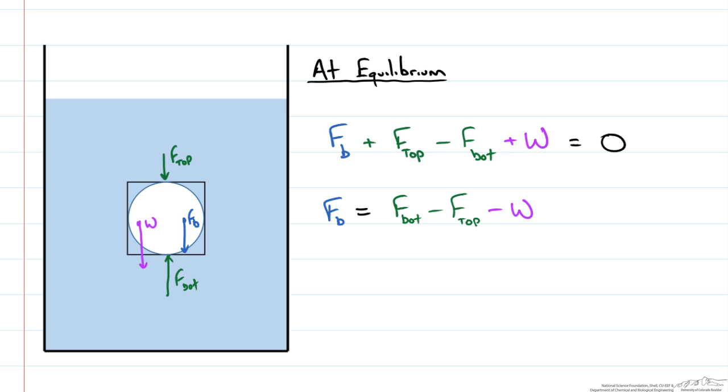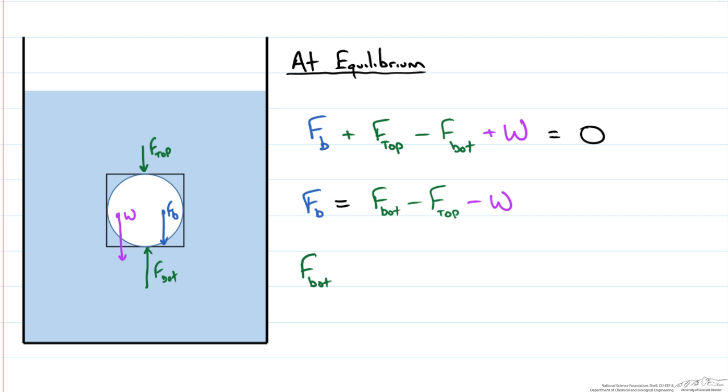So this means that F_B minus F_B is going to be equal to the specific weight of the fluid times the depth to the bottom of the sphere. So we are just going to call this H_bottom minus the depth to the top of the sphere, so H_top. That is our pressure.